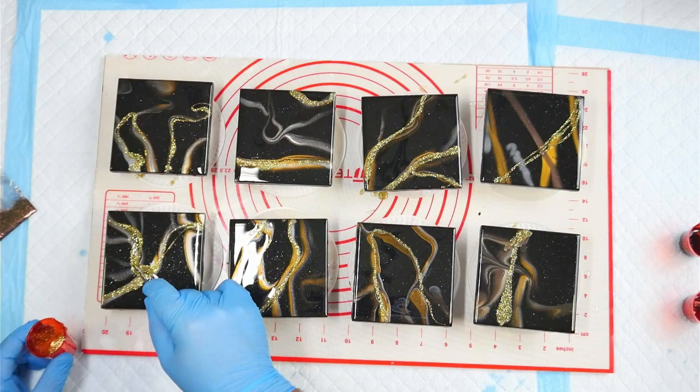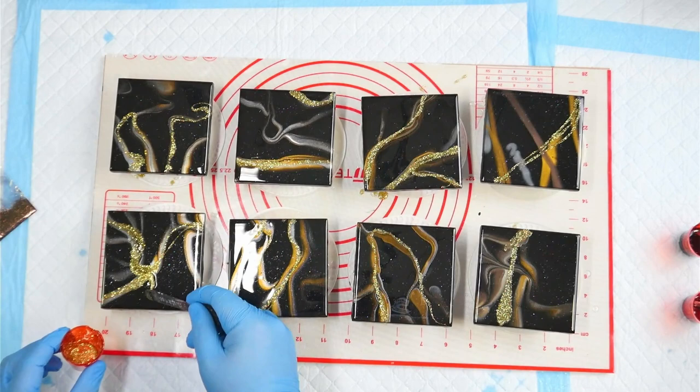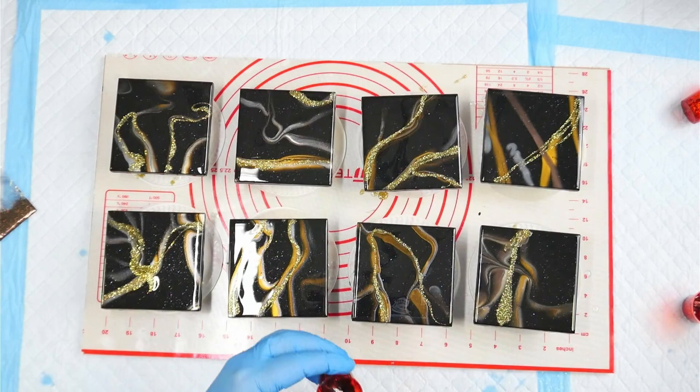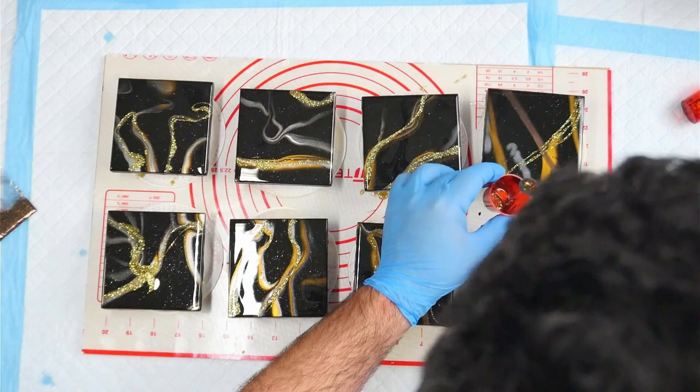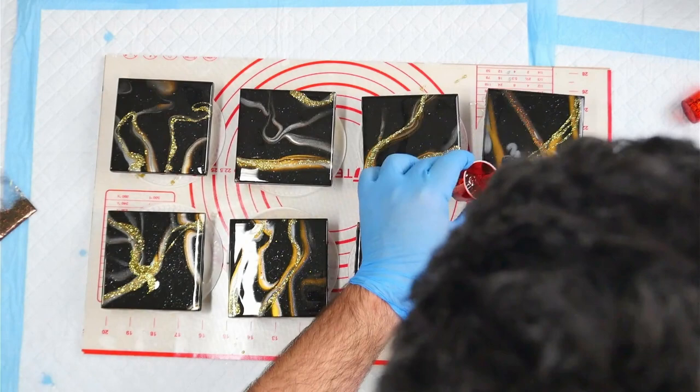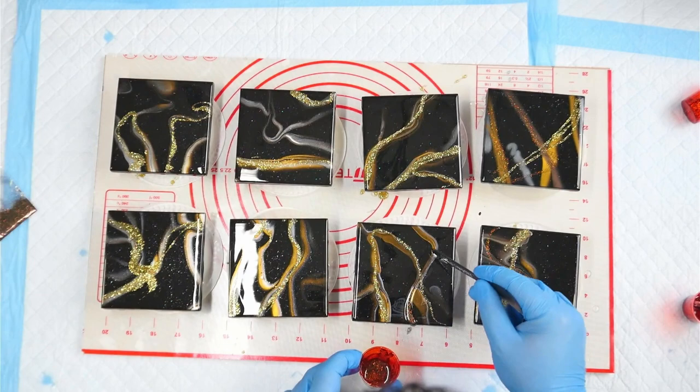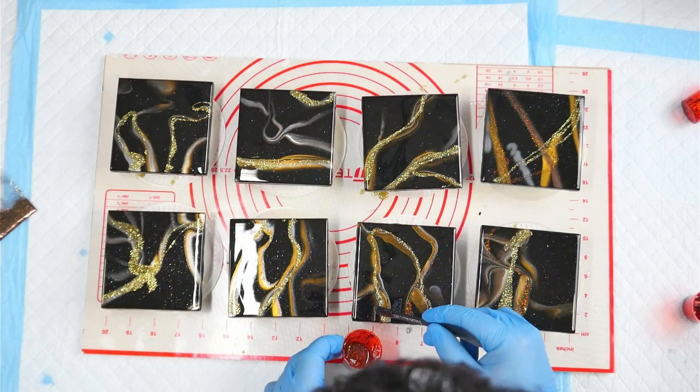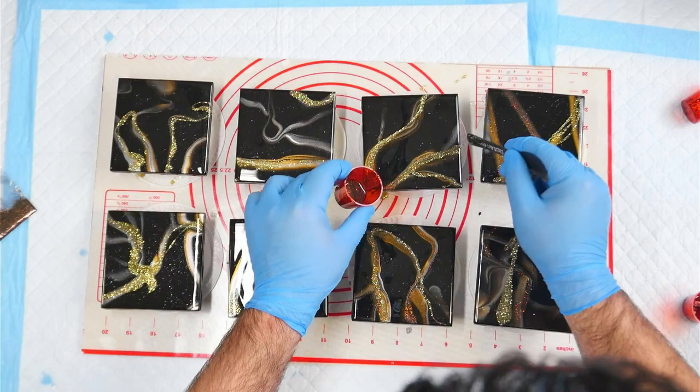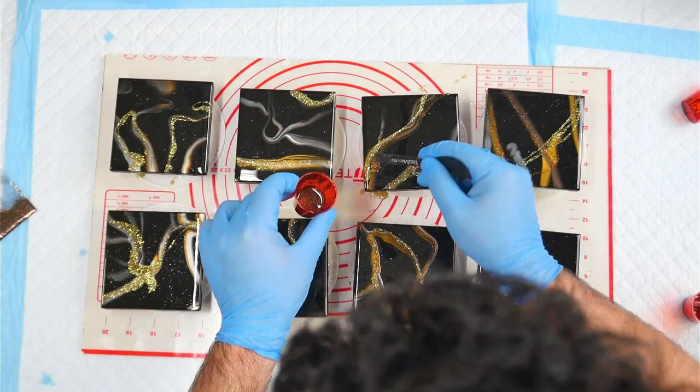I'm just using the end of the stir stick to get in there and spread that around. And I'm going to go in with the rusted olive, this is a really nice colour. So what I've noticed is the rusted olive doesn't have a full-on shimmery effect like the gold does. It's not as opaque, I should say. It's just a little bit of a different effect. It's more transparent.